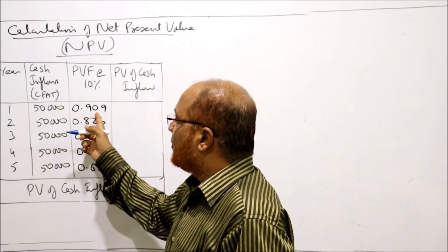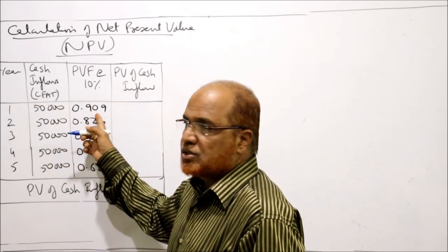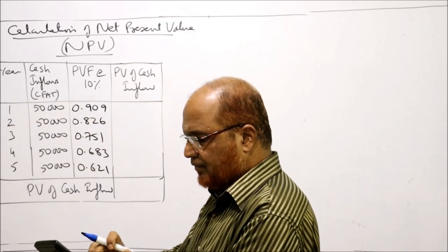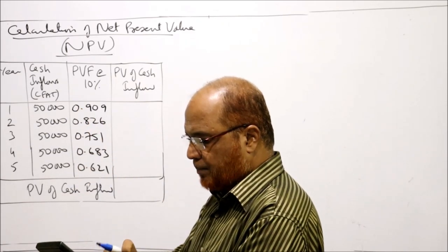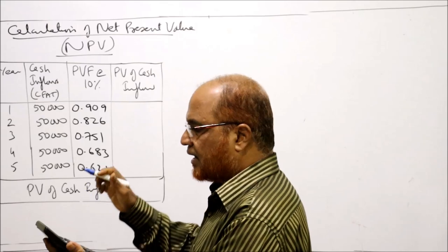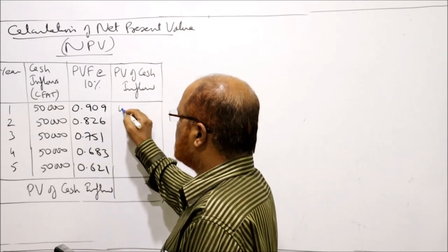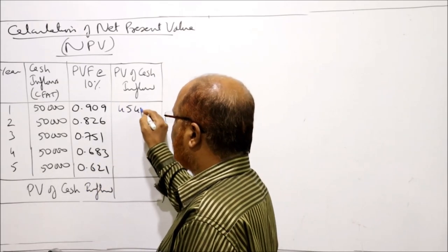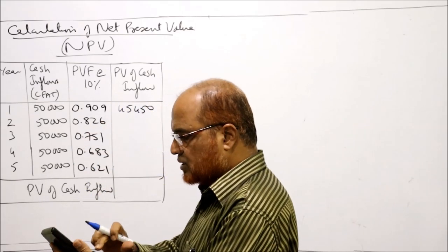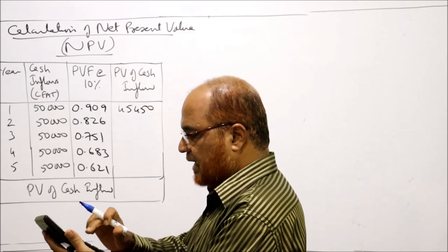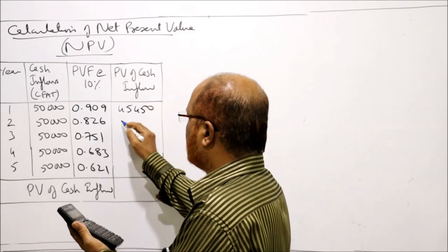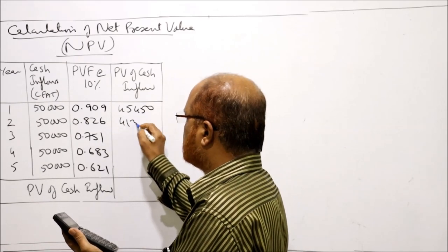Multiply cash inflows with PV factors: 50,000 × 0.909 = 45,450; 50,000 × 0.826 = 41,300.